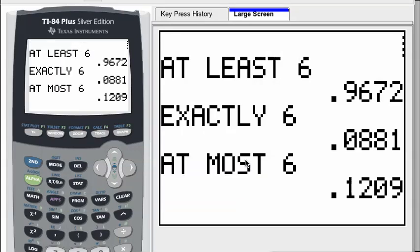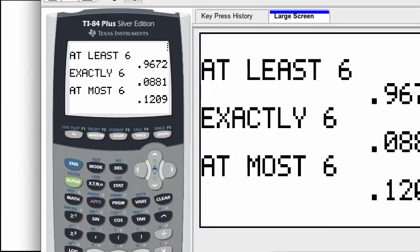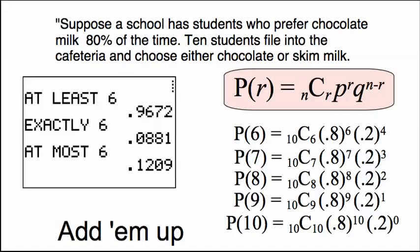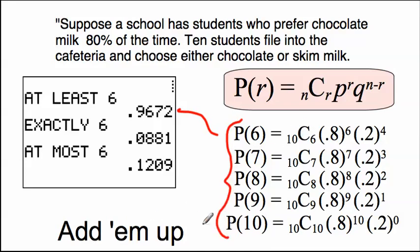It just did a whole bunch of things really quickly. Here's our results screen — let's take a look at what that means and do a little interpretation. At least six refers to adding up all of these binomial probabilities. So at least six is calculated by adding up the probabilities of exactly six, seven, eight, nine, and ten, because at least six includes all the others going up to ten.